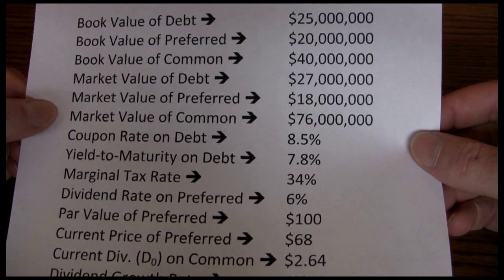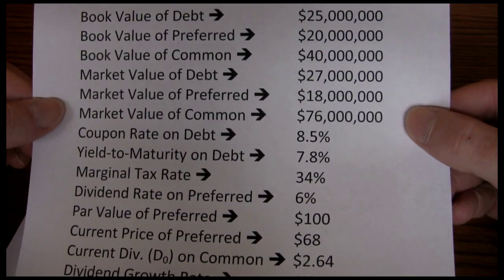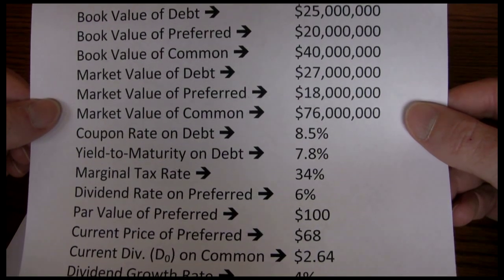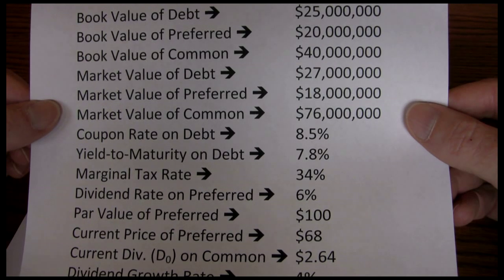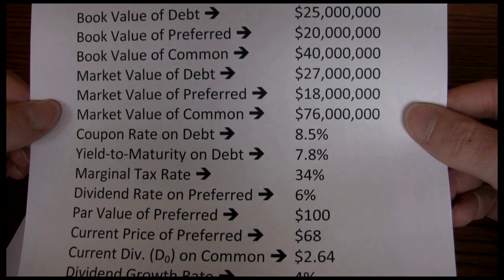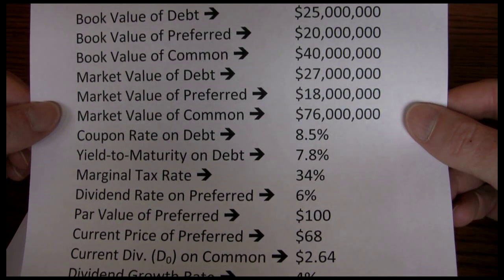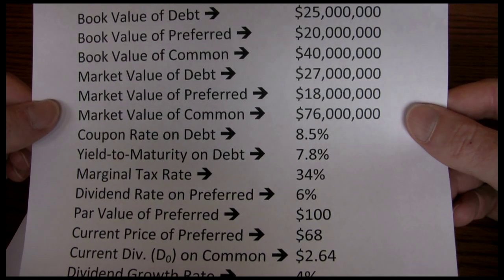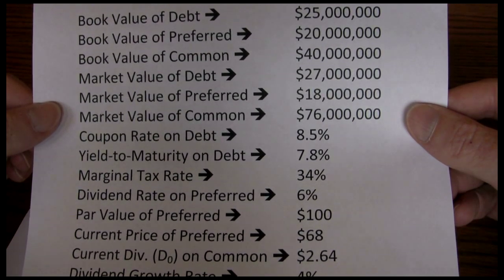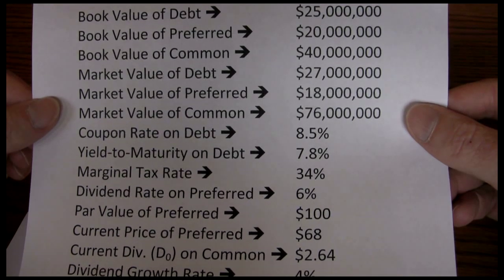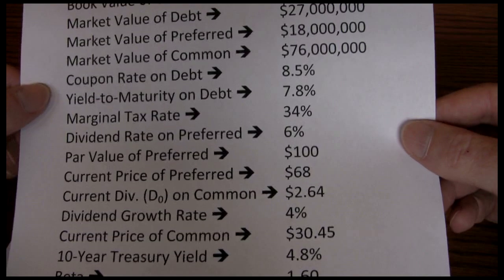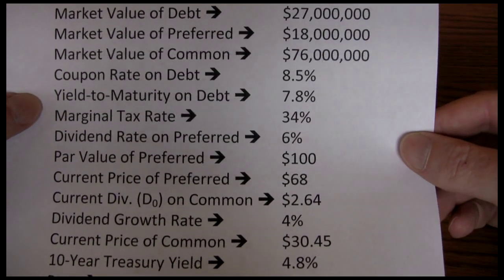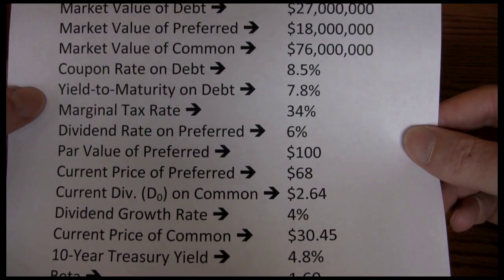There are two ways I typically present market values. One is where I just flat out give you the market value. The other common technique is to give you the number of shares of preferred stock, number of shares of common stock, and number of bonds outstanding, as well as the value of each share. Then you get the market value by taking the number of shares outstanding times the value of each share, giving you the total market value for each component. We'll also typically have both the coupon rate and yield to maturity on debt. Sometimes I will require you to calculate the yield to maturity; other times I'll just give it flat out.